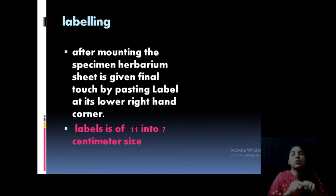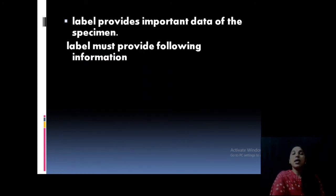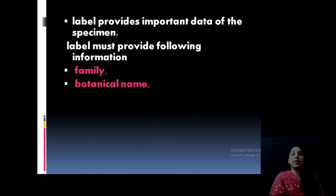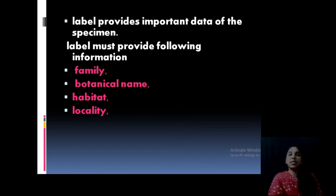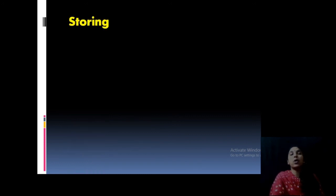The labeling slip should be 11 cm × 7 cm in size — this is the label usually pasted in the herbarium sheet. The label provides important data: the family of the algae, for example Chlorophyceae; botanical name, for example Zygnema; its habitat, for example pond water; locality, for example Taliparamba; ecological notes; date; and collector — who collected it, everything.